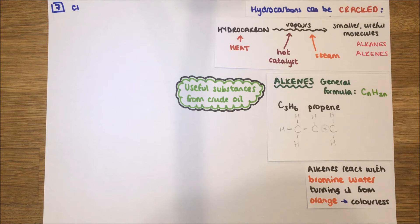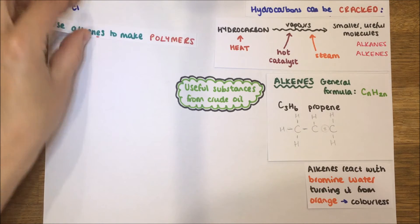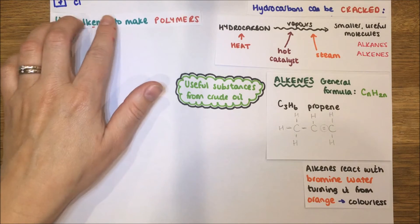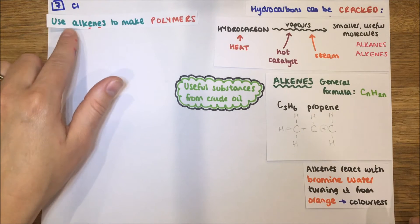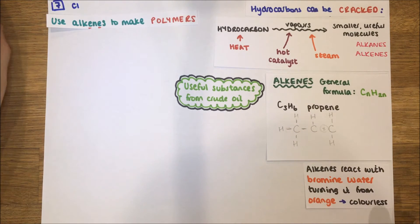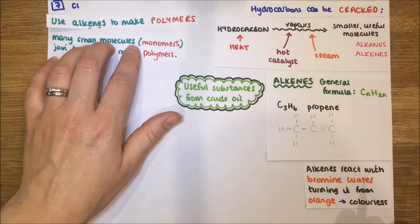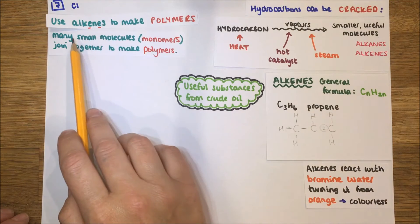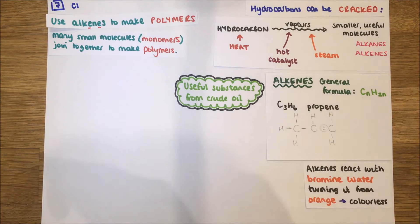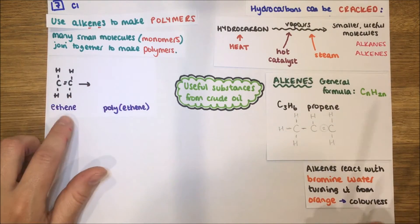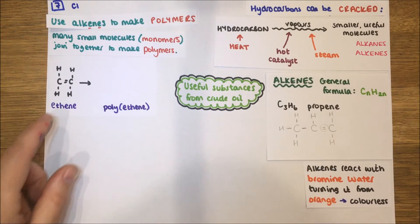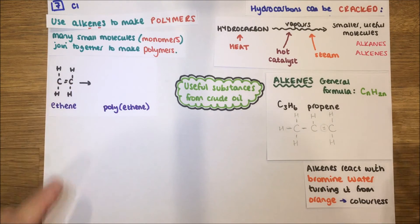We can use alkenes to make what we know as polymers or plastics. 'Poly' means many, so a polymer is a chain of many units. We make them from small units called monomers — 'mono' meaning single — so many small single molecules join together to make a polymer. Looking at the example of ethene as an alkene: it has a double bond and the formula C2H4 — for every carbon we have double the amount of hydrogen.